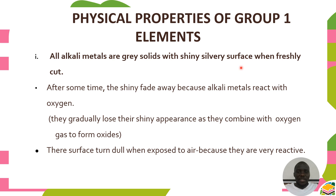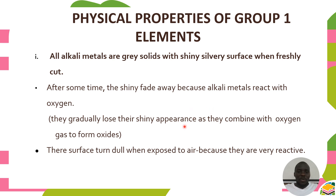The physical properties of Group 1 elements: first, all alkali metals are gray solids with a shiny silver surface when freshly cut. After some time, the shininess fades away because alkali metals are very reactive and react with oxygen in the air. When they react with oxygen, they form an oxide, which changes the surface appearance. Their surface turns dark when exposed to air because they are very reactive.